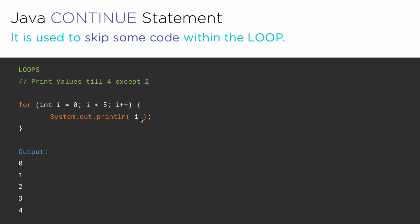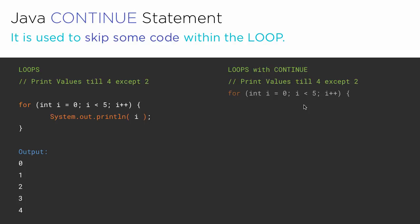Now if we use the break statement, then it will simply break out of the loop and it is not going to print further — i.e. 3 and 4. But we just want to skip the integer 2. So for that, let us use the loop with the continue statement — this is where the continue statement comes into picture.